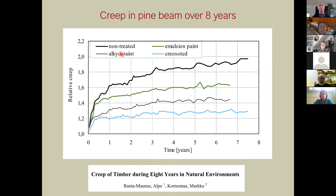In that timber beam study, the creosote coating — acting as the greatest vapor barrier — caused creep to level off quickly into secondary creep with little additional deflection over time. The untreated beam showed considerably more creep. This illustrates the importance of mechanosorptive creep: the acceleration of creep due to humidity changes, visible across seasonal cycles.